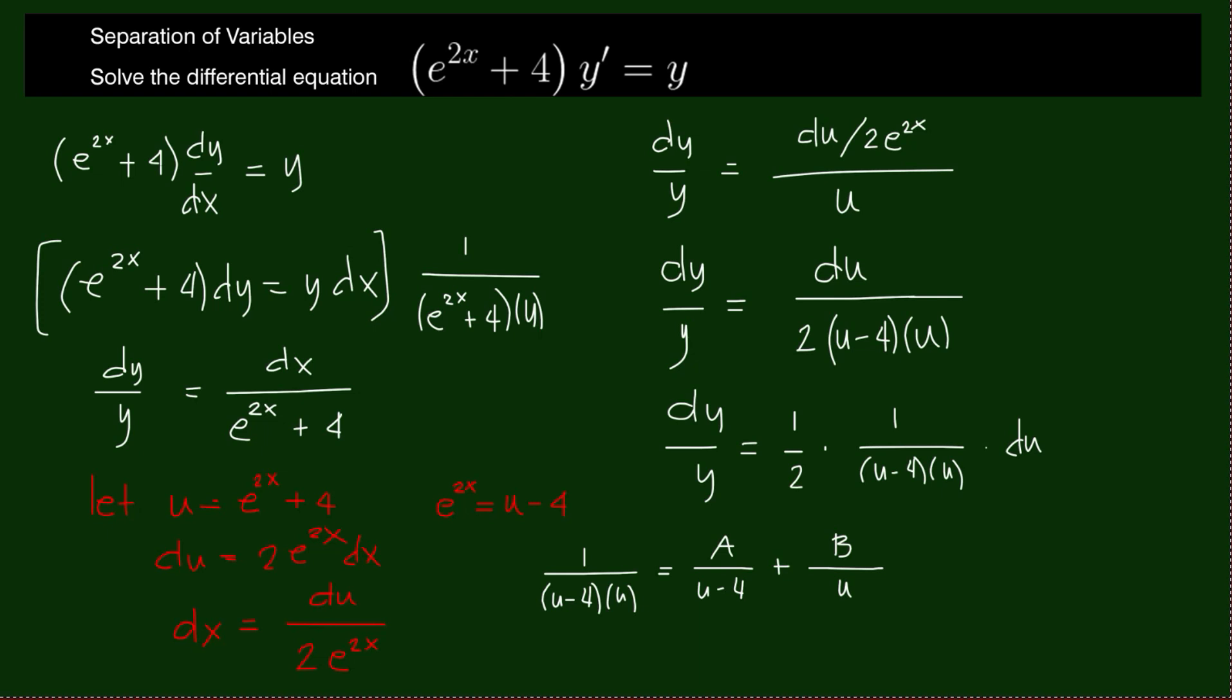Next would be to multiply this by u minus 4 times u, so that we have 1 equals a times u plus b times u minus 4.